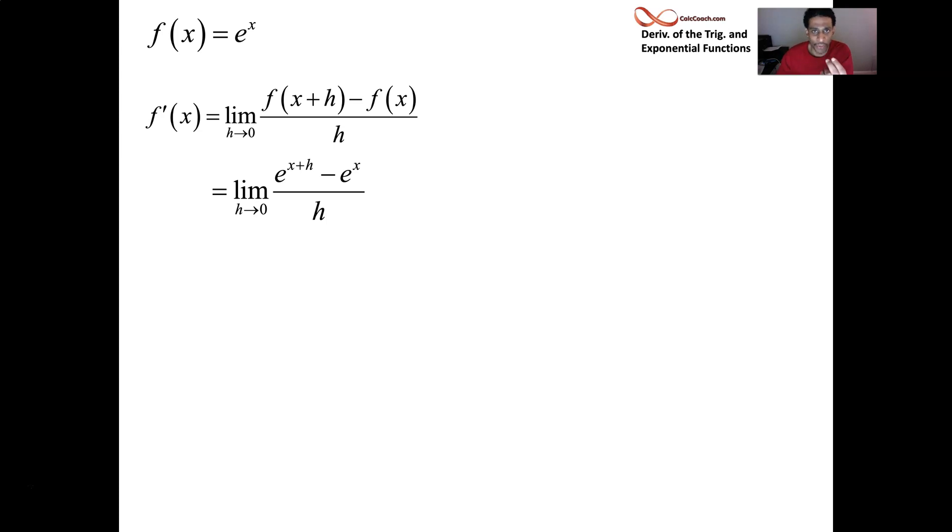The two terms in the numerator share something in common. We can take this e to the x plus h and break it down to be e to the x times e to the h. And now we can see that both of these terms have an e to the x in common. We can factor it out. Upon factoring it out, we can actually pull it all the way out the integral like we did with the sine and cosine proof. If it's a limit as h goes to zero, there's no h's in e to the x, it can come outside.